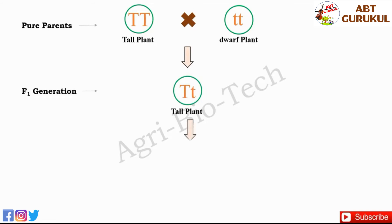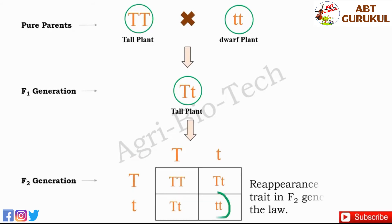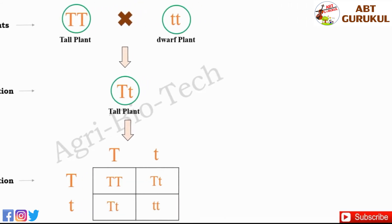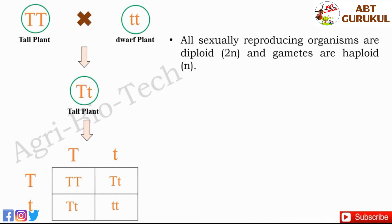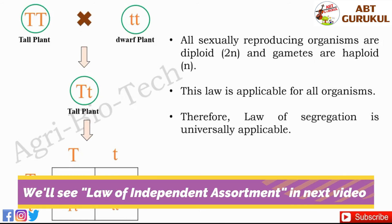He then allowed natural selfing of all F1 hybrids and found that dwarfness reappeared in some plants. The reappearance of the recessive trait in the F2 generation proves the law. All sexually reproducing organisms are diploid and gametes are haploid. This law is applicable for all organisms, therefore the law of segregation is universally applicable.